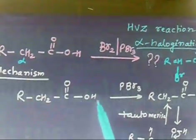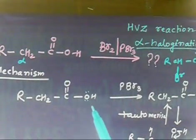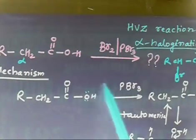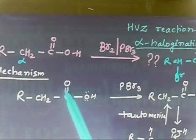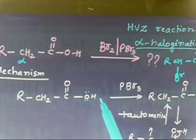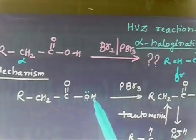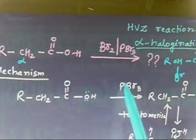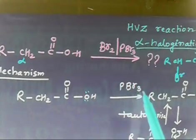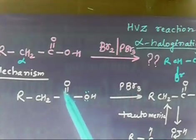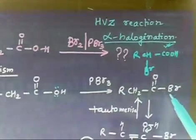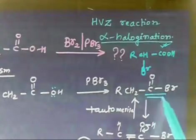The first step: when treated with PBr₃, the OH will be replaced by bromine. The mechanism involves the lone pairs attacking phosphorus — bromine comes in, attacks, and the oxygen lone pair goes to phosphorus since phosphorus can violate the octet. So you will have a bromine added here, giving an acyl bromide.